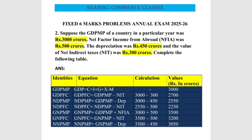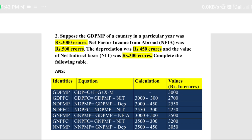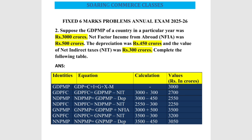Without wasting any time, I will start today's video. The question will be asked like this: suppose the GDP of a country in a particular year was rupees 3000 crores. Net factor income from abroad (NFIA) was 500 crores. The depreciation was rupees 450 crores. And the value of net indirect taxes (NIT) was 300 crores. Complete the following table.